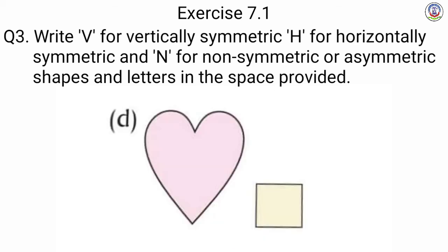Next is D — we have the shape of a heart. हम लोग को heart का shape दिया गया है, अब यह कैसे cut होगा — it is cut vertically. So we write here in the box V.